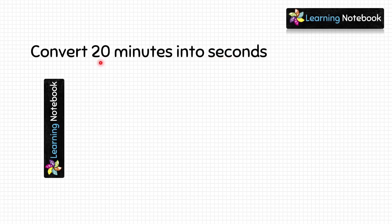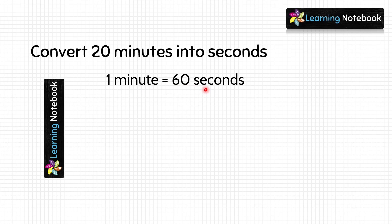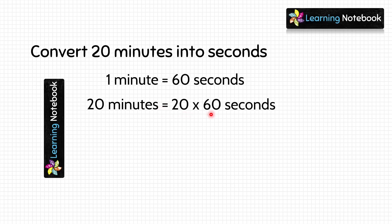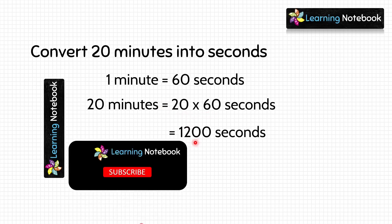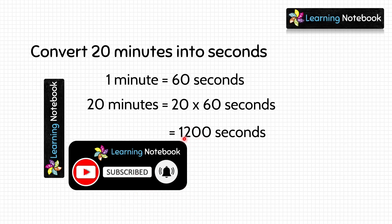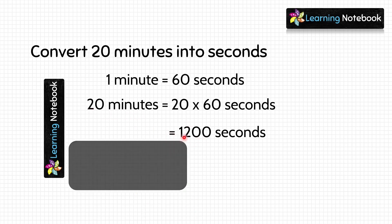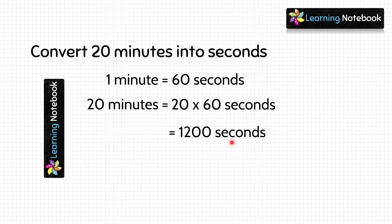The next question is: convert 20 minutes into seconds. We solve this the same way as the previous question. We know one minute equals 60 seconds, so 20 minutes would be equal to 20 multiplied by 60 seconds. 20 into 60 equals 1200, so 20 minutes equals 1200 seconds.